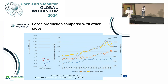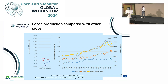Similarly, not only for cocoa — we have other crops such as rubber, coffee, and oil palm. These are all commodities which are part of the EUDR, and there are also trends showing that production of these is increasing over the years.